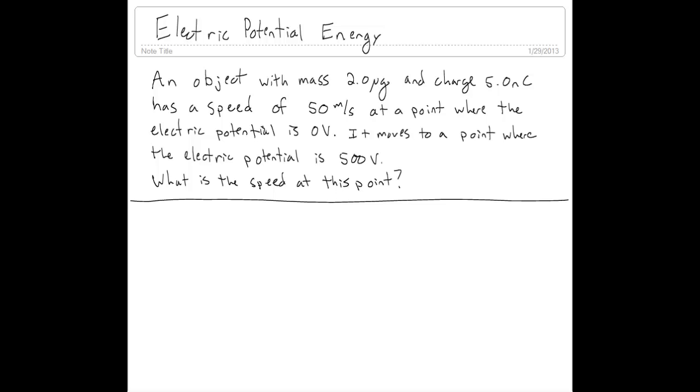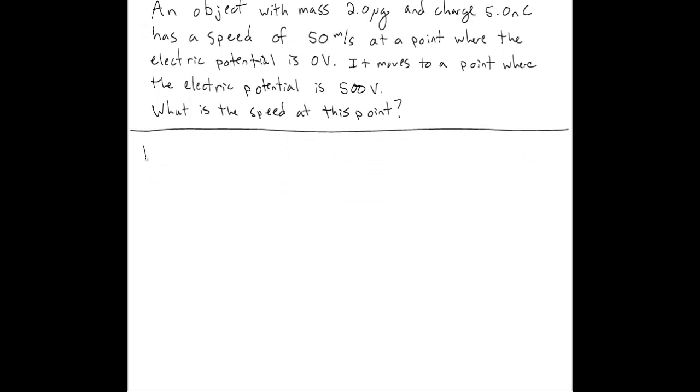As with any energy-type problem, the first thing we're going to do is draw a picture of what's going on. Let's start by drawing the initial point where we have a charge Q moving at an initial speed of 50 meters per second, and the potential there is 0 volts.